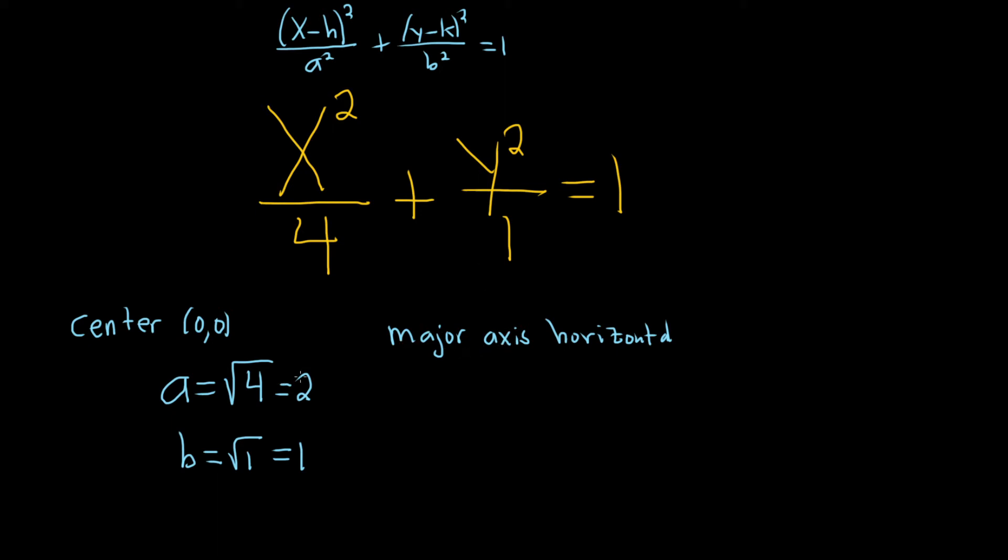The vertices are the endpoints of the major axis. Again, in an ellipse, a is the square root of the bigger number. Because the bigger number is under the x, the major axis is horizontal. That means it looks like this. If the bigger number is under the y, it's vertical, so it would look different. It would look like an egg standing up.